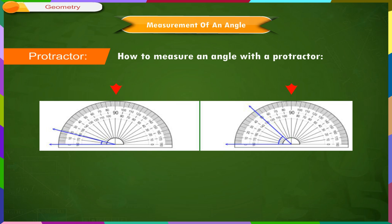In the examples shown here, we have lined up one side of the angle with the 0 of the outer set of numbers, which is on the left side. So, to measure the angle, we need to read the outer scale.